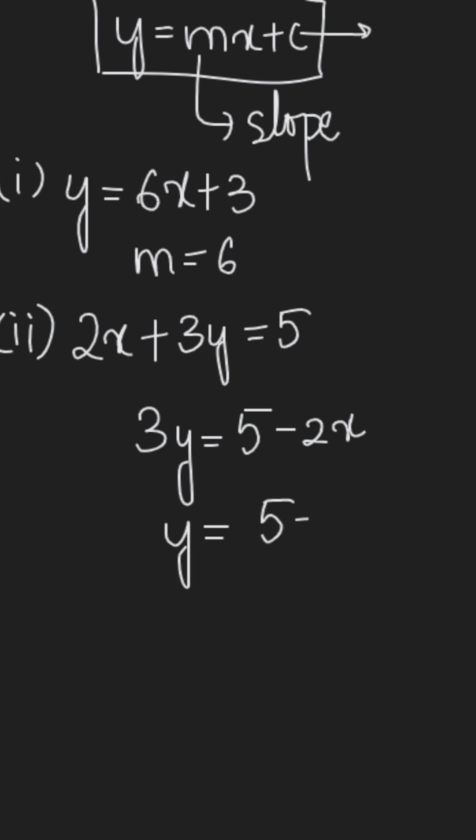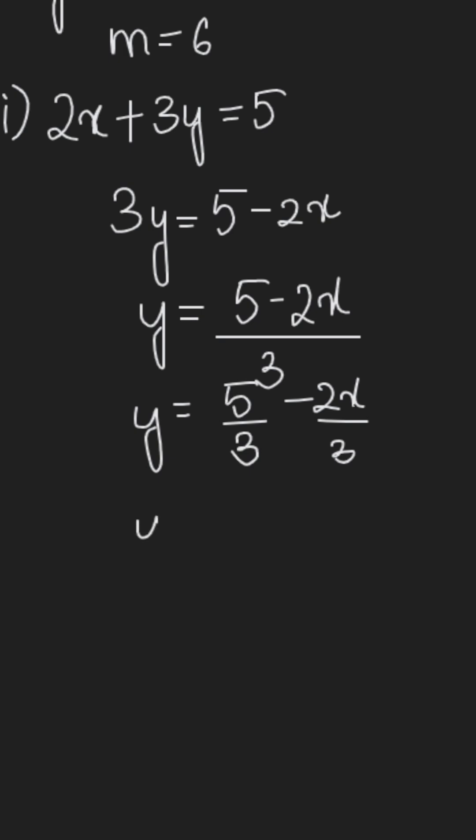Y equals 5 over 3 minus 2x over 3. Rearranging this further, we get y equals minus 2 over 3 x plus 5 over 3.